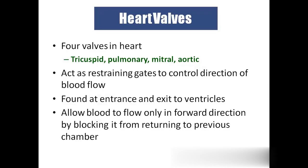Coming to the heart valves, we have four heart valves: tricuspid, pulmonary — at the entry of the pulmonary artery — mitral on the left side between the left atrium and left ventricle, and aortic at the entry of the aorta. These are the gates to control the flow of blood. Without valves, there will be backward flow of blood — we call that regurgitation.